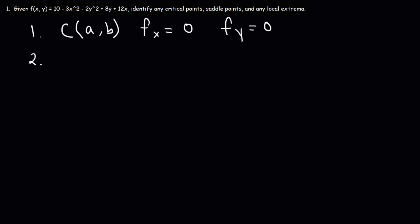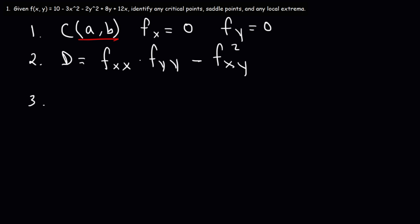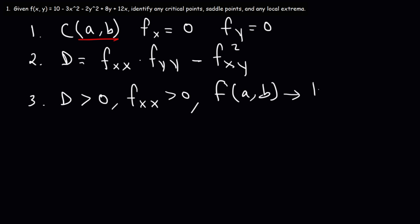The second thing we want to do, once we've identified this point, is we need to calculate D. We need to do that by finding the second partial derivative. So D is going to be f double x times f double y — where this is the second partial derivative with respect to x and this is the second partial derivative with respect to y — and then minus the mixed partial derivative squared. Once we have the value for D, we can analyze the point. If D is positive and f double x is positive, then f of a, b is a local minimum. That's case one.